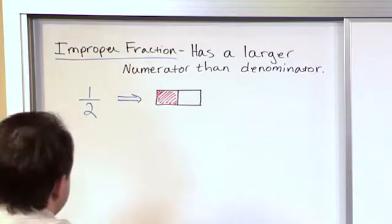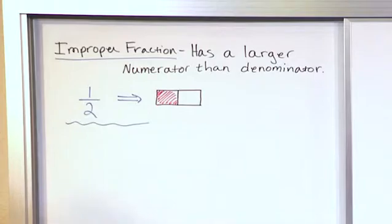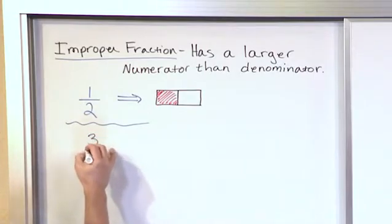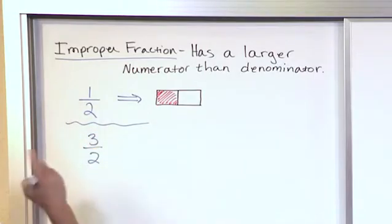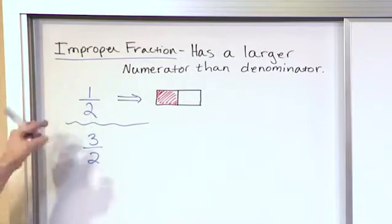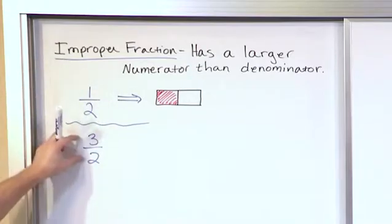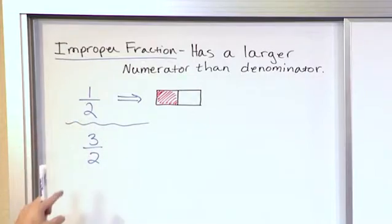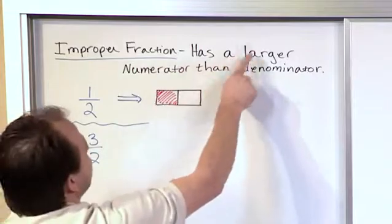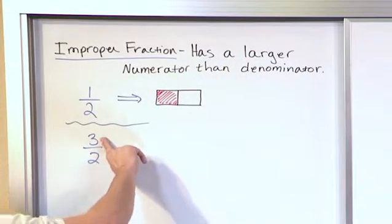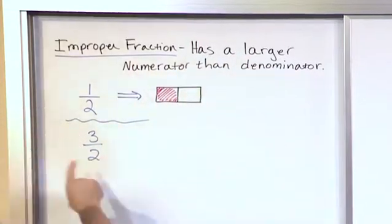Now let's say what if we have a fraction that looks something like this? Three over two. The way you say this is three halves. So here we have one half, that means one out of two pieces, and here we have three halves. So this is what we call an improper fraction because it has a larger numerator—that means top number—than the denominator, that means the bottom number.